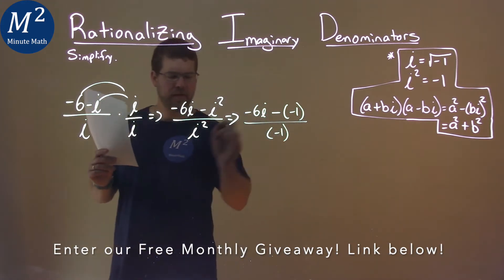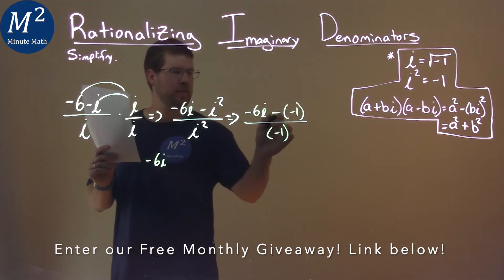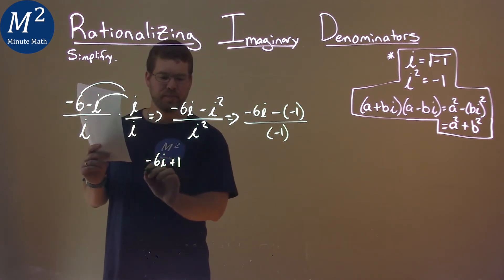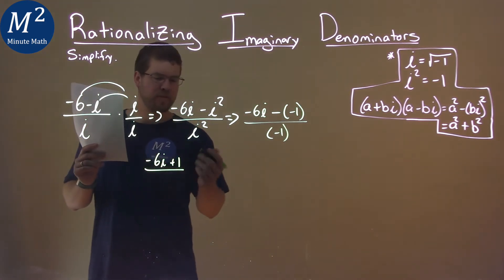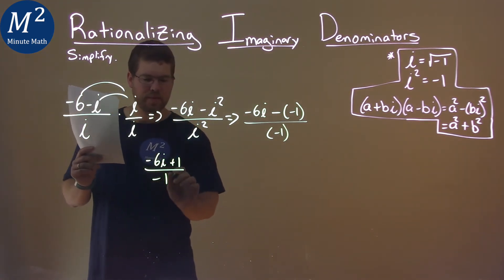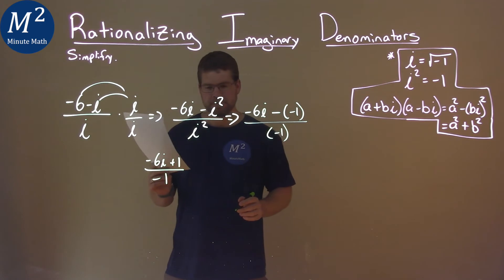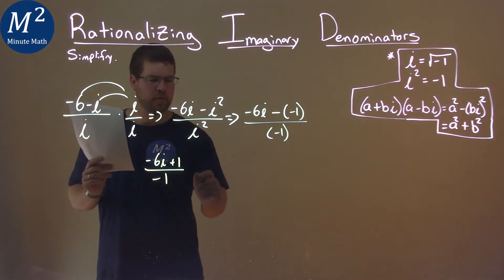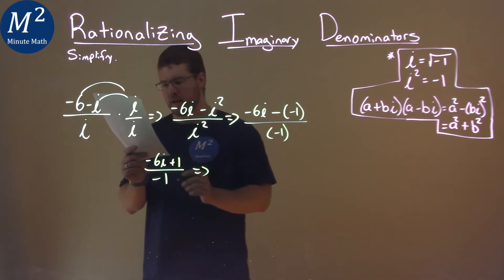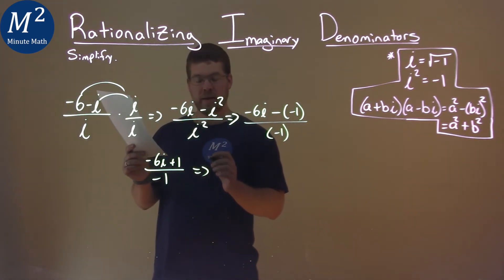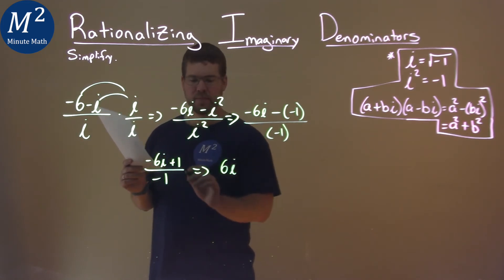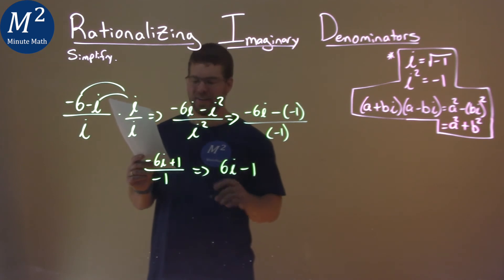Let's rewrite that: negative 6i, and instead of minus a negative 1, it's like plus 1. We're still dividing by negative 1. Dividing negative 1 into both parts of the numerator: negative 6i divided by negative 1 is positive 6i, and 1 divided by negative 1 is minus 1.